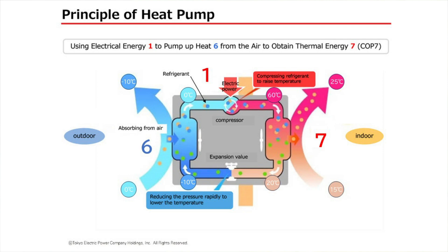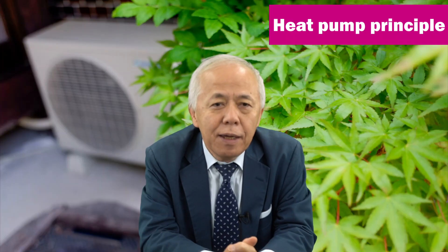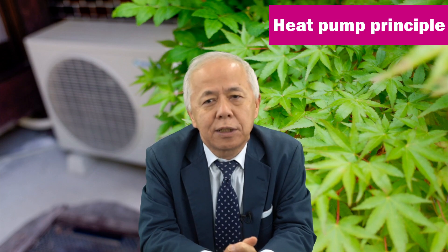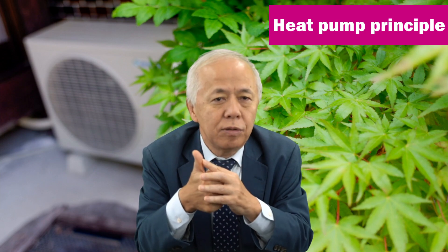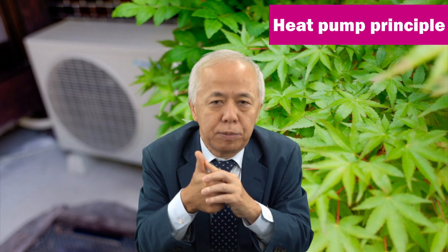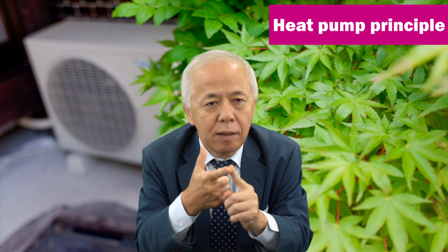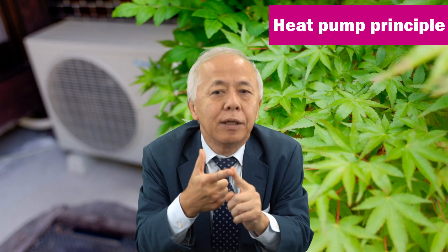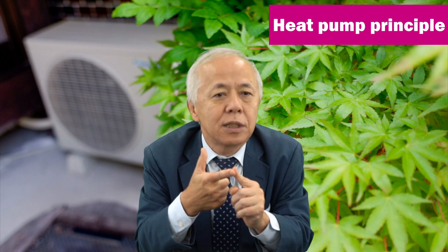By repeating this process, the heat from the atmosphere is drawn up and delivered inside the room. This illustration shows the principle of heating a room. But when cooling, it rotates in the opposite direction, drawing heat from the room and releasing it to the outside. In this way, heat pumps use two characteristics of heat: heat moves from a warmer place to a cooler place, and compressing air raises its temperature while depressurizing it lowers its temperature.